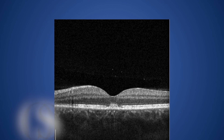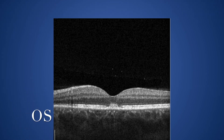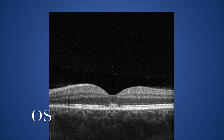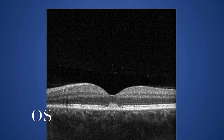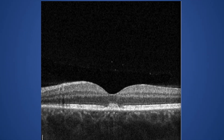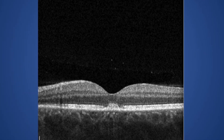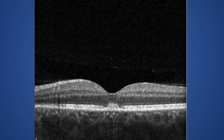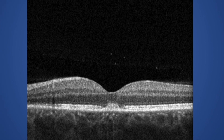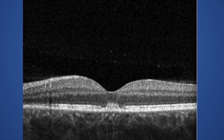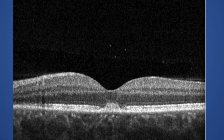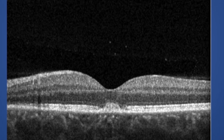OCT examination of the left eye shows a disruption of the outer retinal bands, as well as thickening of these layers. The pathology is mainly involving the inner side of the retinal pigment epithelium, as well as the photoreceptor layers, with some involvement of the external limiting membrane.